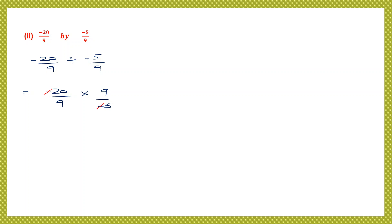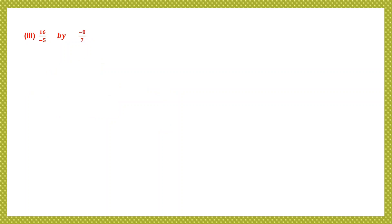We cancel the minus signs in numerator and denominator. We cancel 20 and 5 both by 5, giving 4 and 1. We cancel 9 and 9, giving 1 and 1. Numerator: 4 into 1 is 4; denominator: 1 into 1 is 1. So 4 by 1 — final answer is 4.